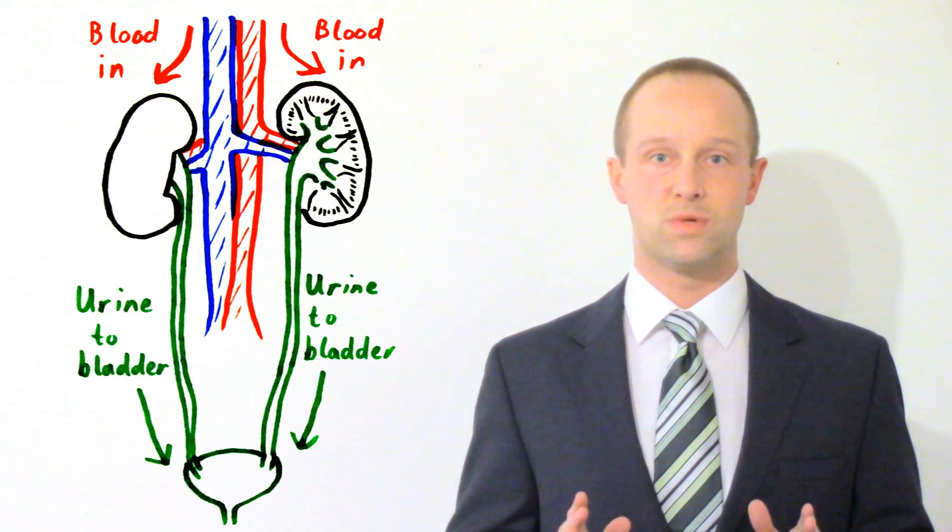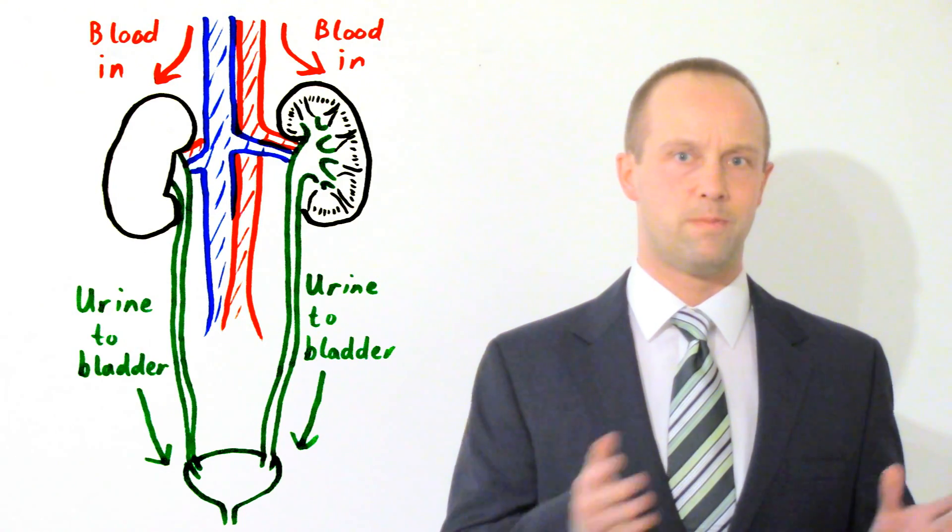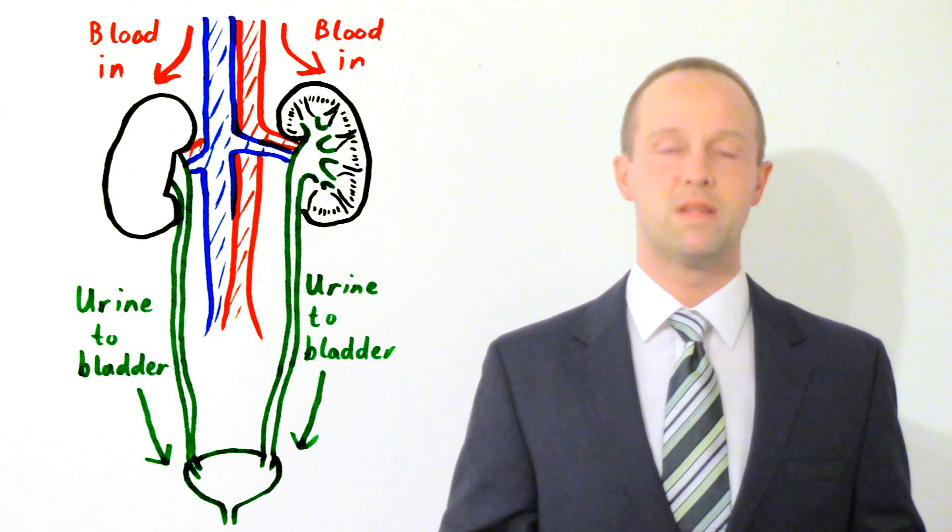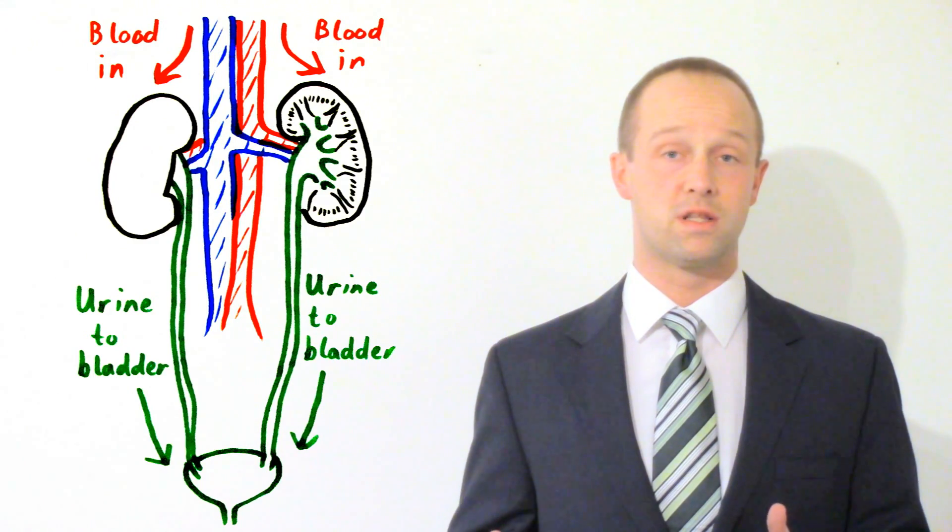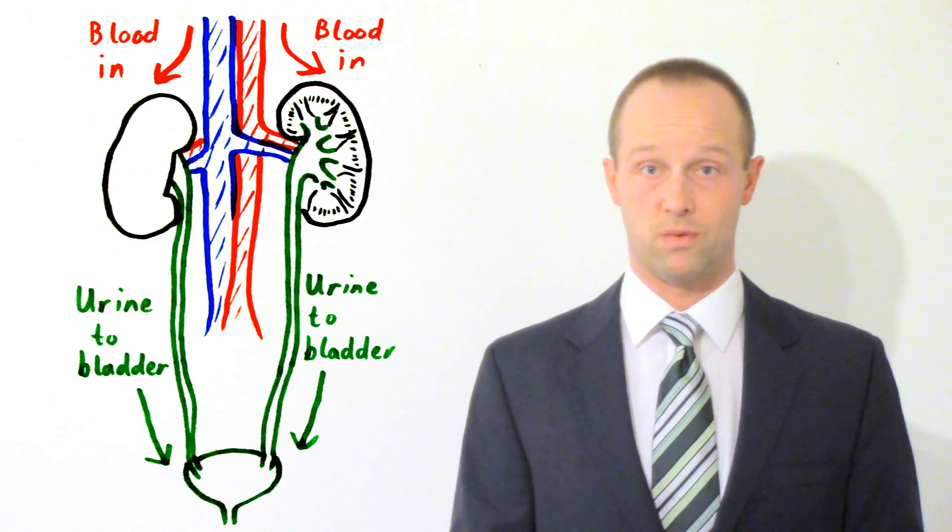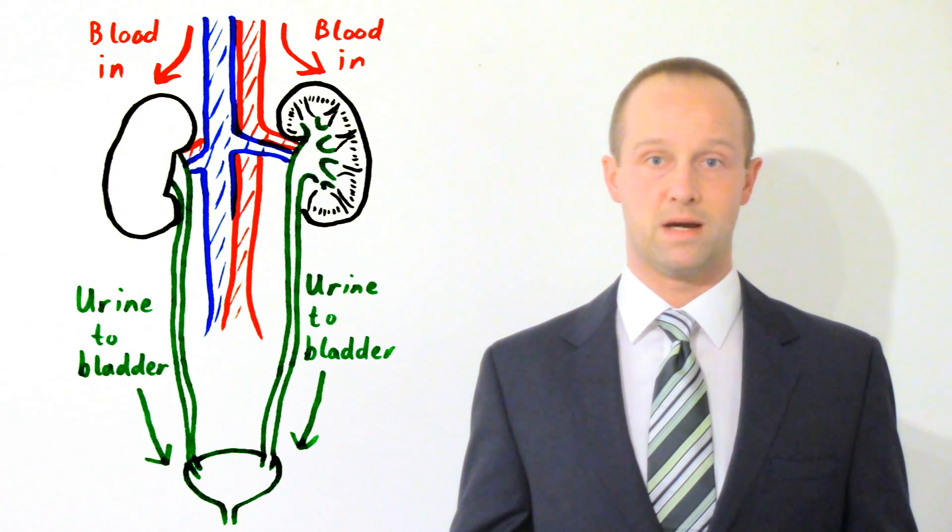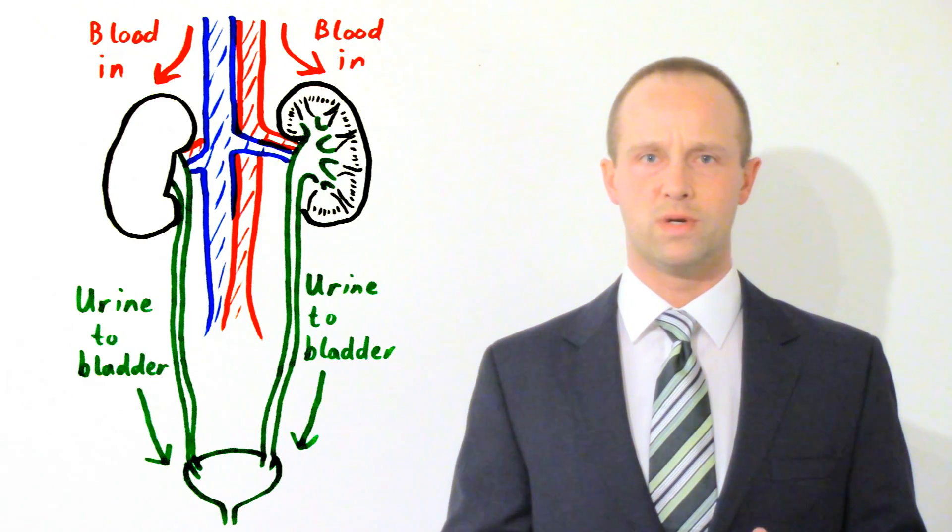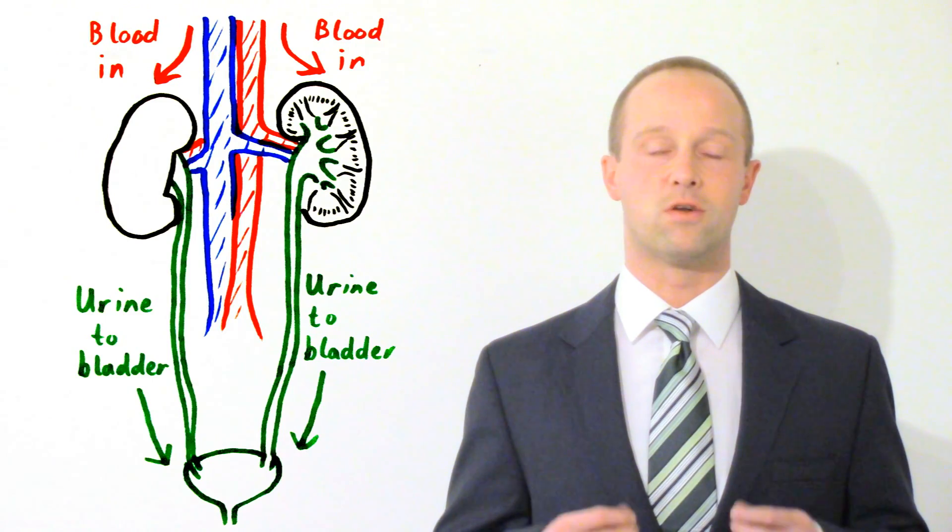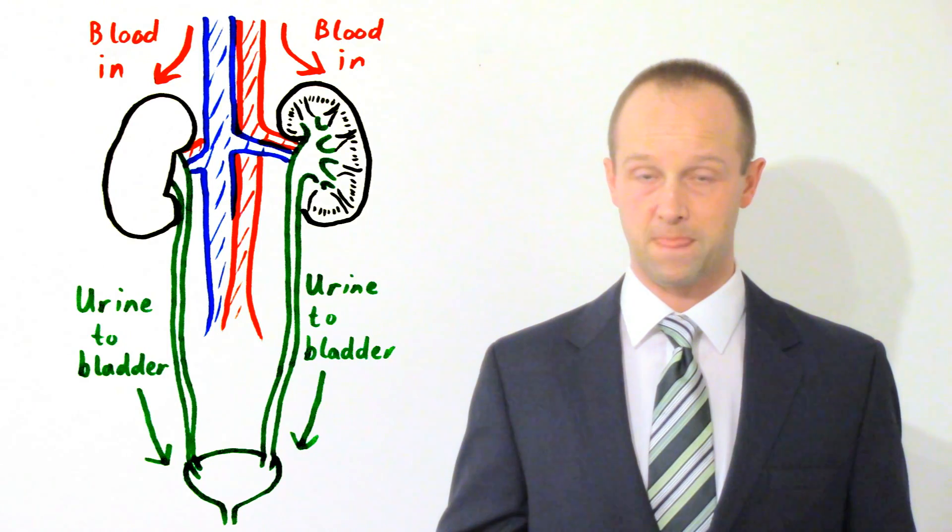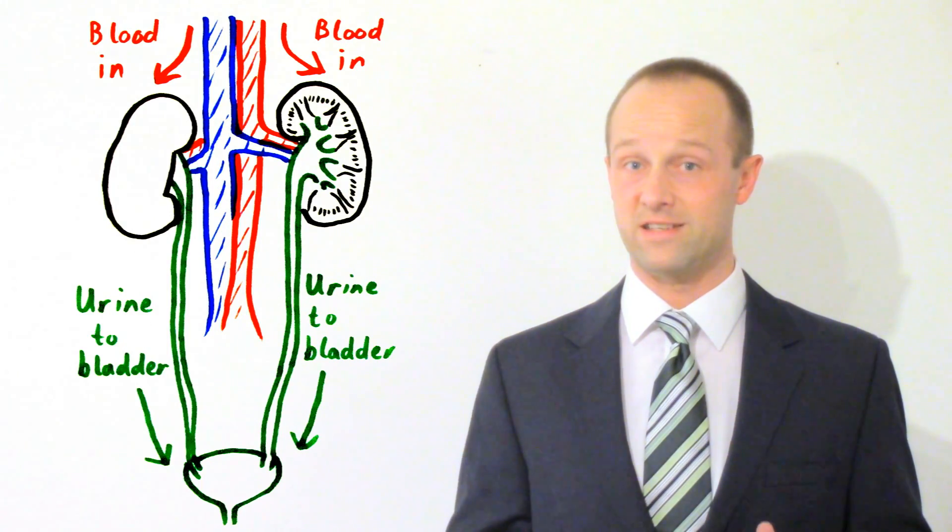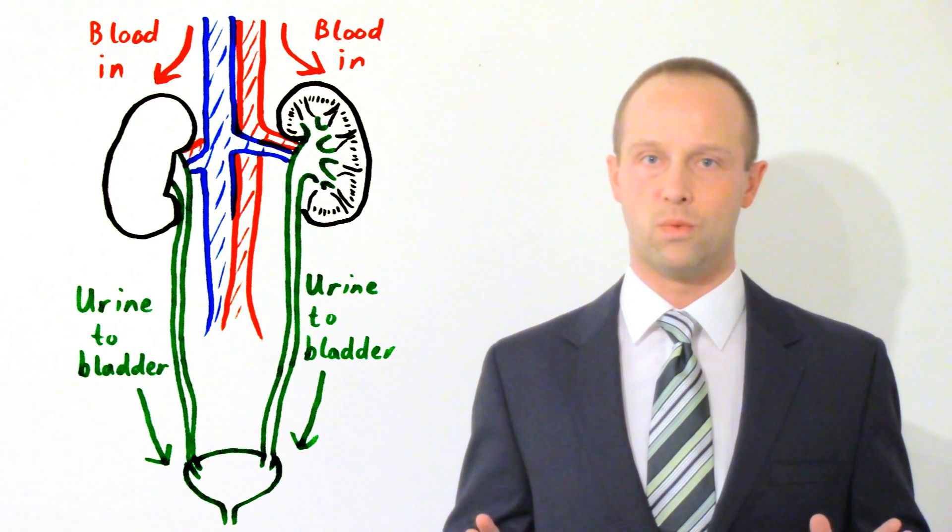Now those things which have been filtered out are then actually mainly reabsorbed back into the bloodstream, but the kidneys control the amounts which are reabsorbed. Most of the glucose will be reabsorbed pretty much straight away. Some of the salts may be absorbed. The amount of water which is reabsorbed is carefully controlled to help maintain your level of hydration. And the urea doesn't actually get reabsorbed at all. That's a pure waste product.